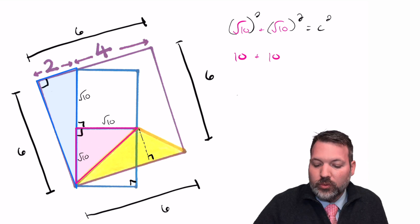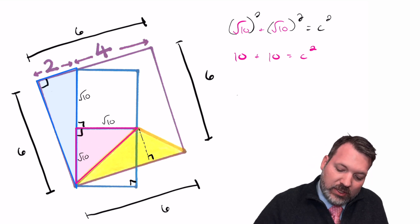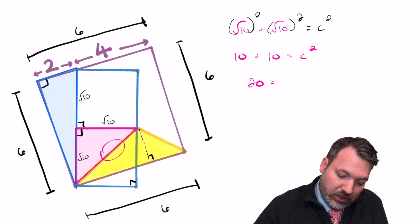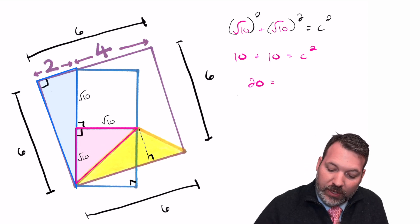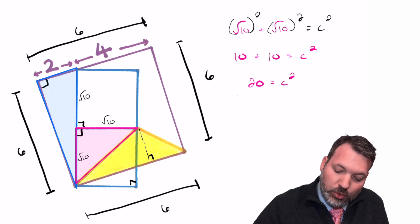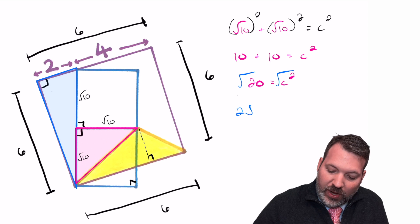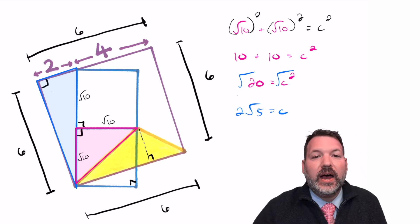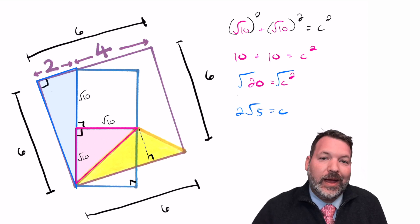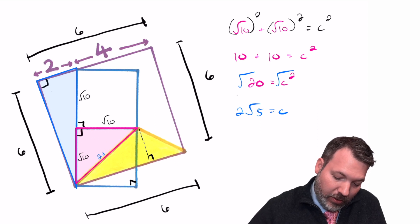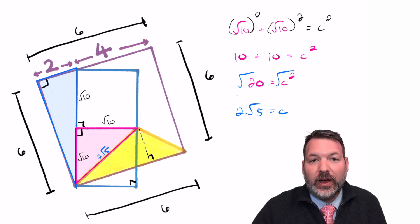√10 squared is 10, √10 squared is 10. And so c squared in this case, again, c being the hypotenuse along that yellow triangle, is equal to 20. Once more, if we simplify that we get 2√5 is equal to that hypotenuse, that diagonal. So this right here is 2 times the square root of 5.